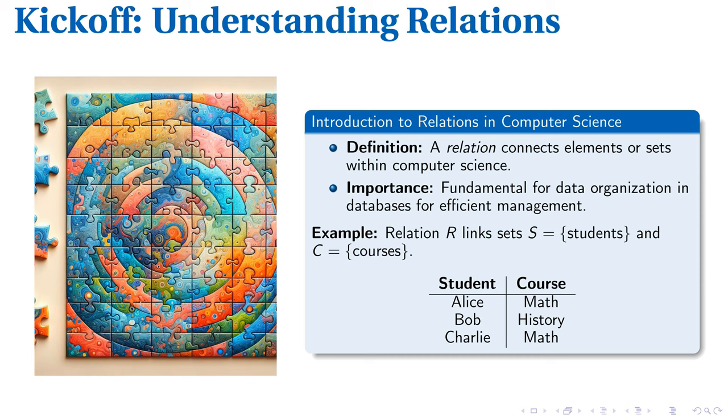Alice likes numbers and joins math. Bob prefers interpreting events leading him to history, while Charlie finds himself fascinated by formulas, pulling him towards math like Alice. Such plain associations underline the ties between diverse sets of data within databases, offering a sneak peek into the tangible applications of relations.